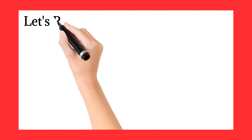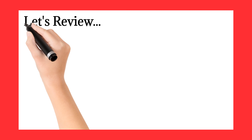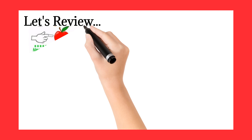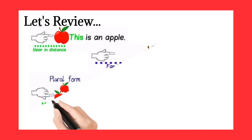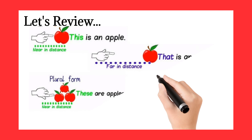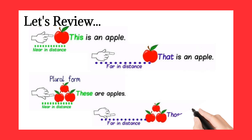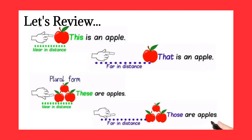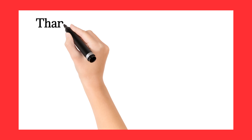Let's review. Singular form: 'this is an apple' (near), 'that is an apple' (far). Plural form: 'these are apples' (near), 'those are apples' (far).